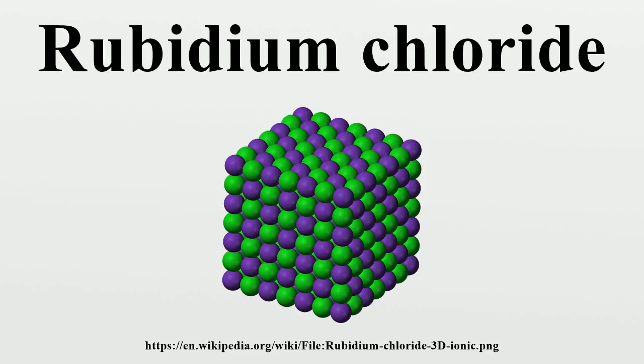Because a cube has eight vertices, both ions' coordination numbers equal eight. This is RbCl's highest possible coordination number.